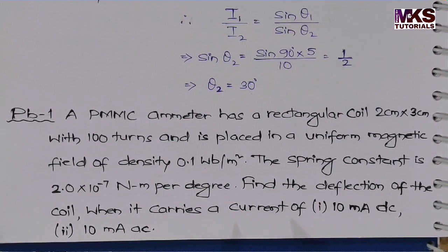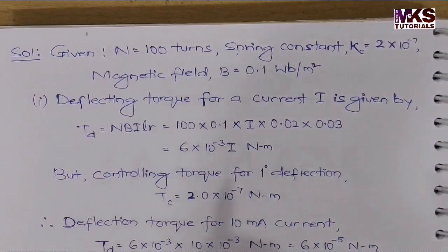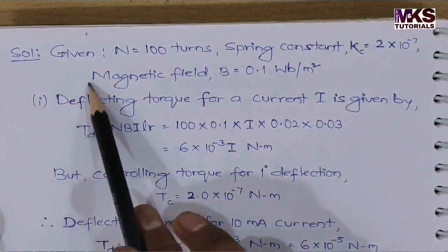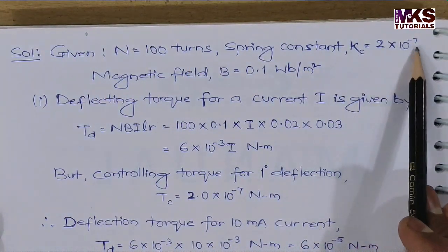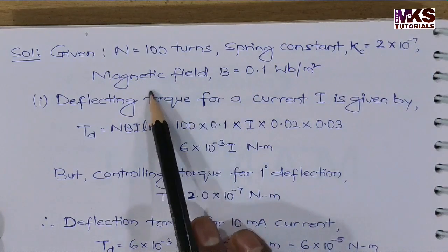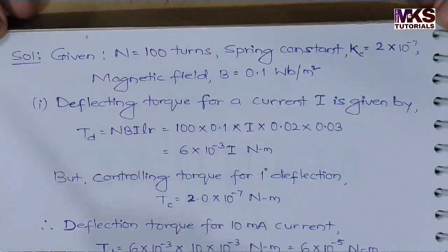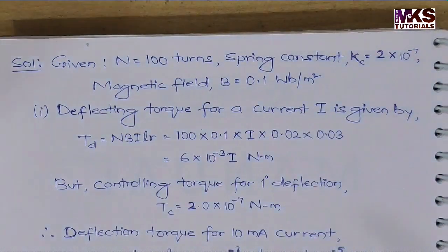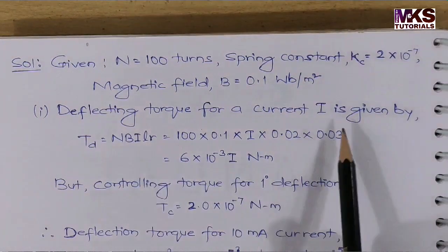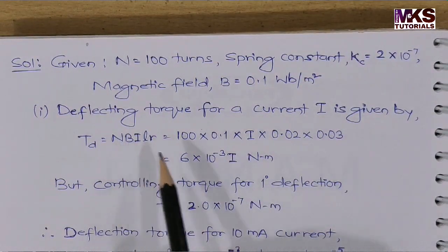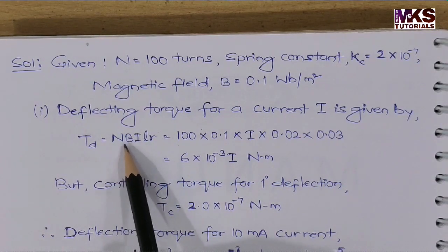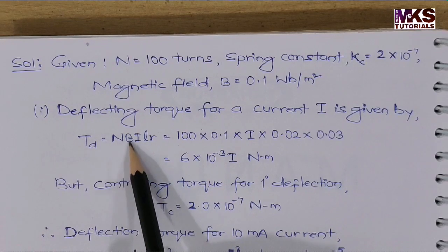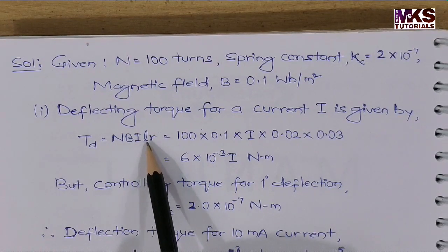Let's see the solution. Given: N = 100 turns, spring constant Kc = 2 × 10⁻⁷ Newton meter per degree, and magnetic field B = 0.1 Weber per meter square. The deflecting torque for current I is: TD = N × B × I × L × R, which is N × B × I × A, where A = L × R (length × breadth).